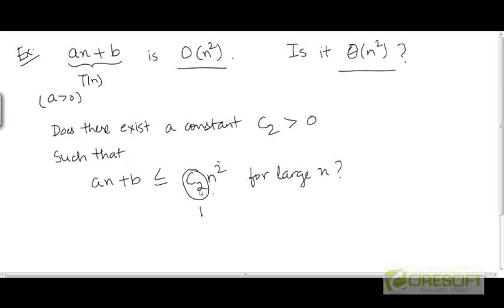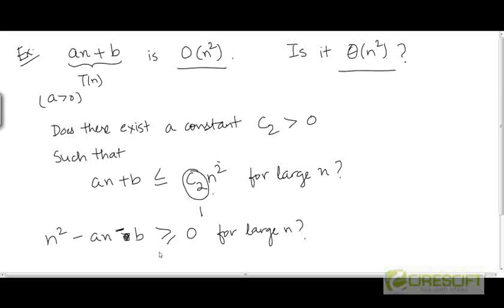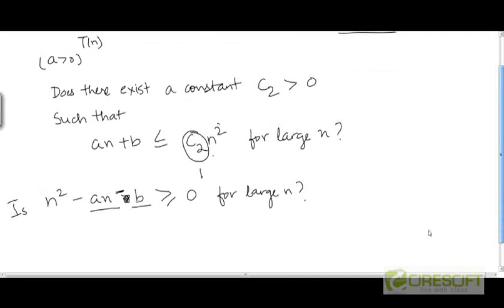So let's take c₂ equal to 1. We want to find out if n² is greater than or equal to an plus b, or equivalently if n² minus an minus b is greater than or equal to 0 for large n. The answer is yes, because as n becomes very large, the terms an and b are going to be insignificant compared to the value of n², which is going to grow very fast.